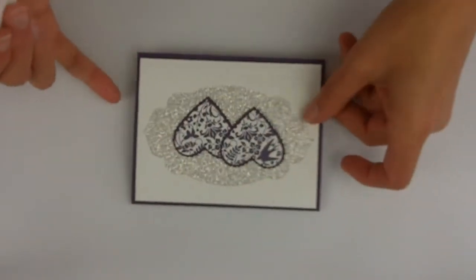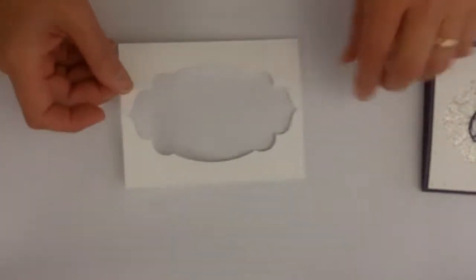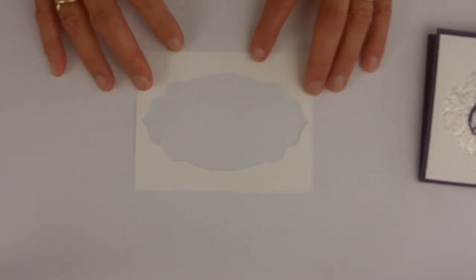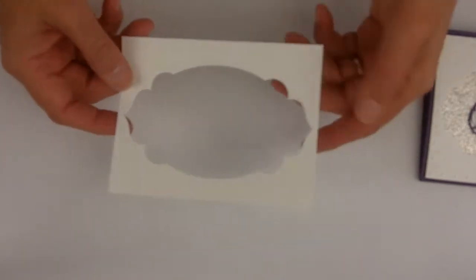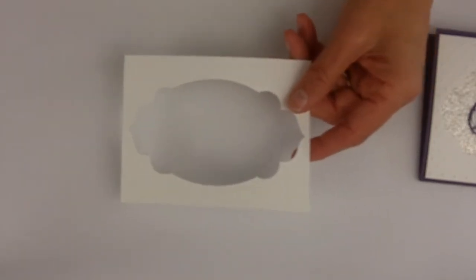So for the base of the card, we have our Elegant Eggplant, and then for the front I have a sheet of Whisper White that is four by five and a quarter. I put this through the Big Shot with the Apothecary Accents. You'll see that that's the front layer.